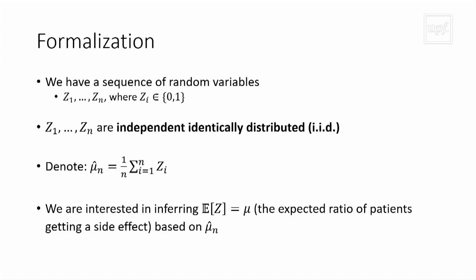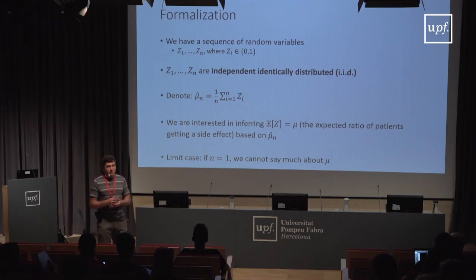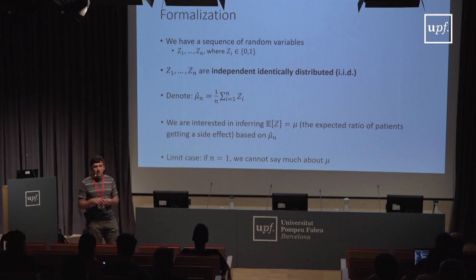You may be tempted to say you had 30% side effects, so that's what you'll observe on new samples. But the size of the sample comes into play. If n equals 1 — you give the drug to just one patient — the outcome is 0 or 1, and you don't really expect mu-hat to be close to the expectation. As you increase the sample, mu-hat-n gradually gets closer to mu. The question is: how fast does the empirical average approach the true mean?